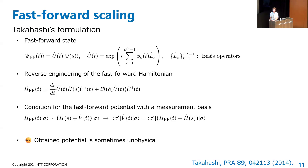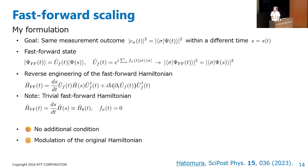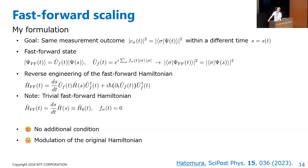Now, let me talk about my theory. First, I will talk about energy-saving fast-forward scaling. I basically consider the formulation of fast-forward scaling. The goal is to obtain the same measurement outcome in a chosen measurement basis between dynamics at different time scales. Such a dynamic is given by the fast-forward state. In my formulation, this is given explicitly using the projection operator of the measurement basis, and F-sigma is an arbitrary phase factor. This condition for fast-forward scaling is automatically satisfied.